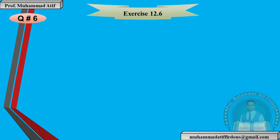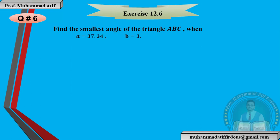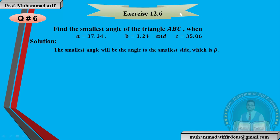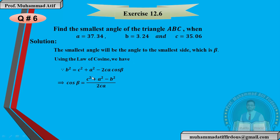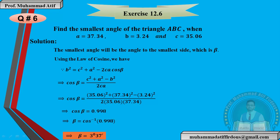Now, Question 6 has a difference — it asks to find the smallest angle. The smallest angle will be opposite the smallest side. Looking at the sides, b = 3.24 is the smallest side, so we find β — the angle opposite to b. Apply the cosine rule for β, replace the values of A, B, C, and use the calculator. You can see how simple these questions become — just practice them.